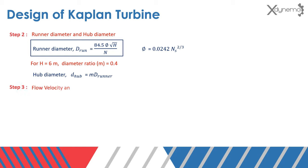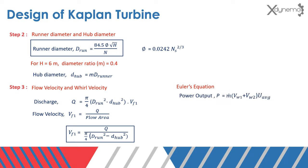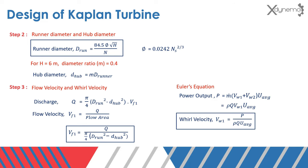Step 3: flow velocity and whirl velocity. Look at the formula of discharge through Kaplan turbine. Flow velocity VF equals discharge divided by flow area. Here is the equation to calculate flow velocity. Let us consider Euler's equation for power output. VW2 is 0 for Kaplan turbines with axial outlet. The average blade velocity is considered in this equation. The whirl velocity VW equals P divided by rho*Q times U_average. Here is the equation to calculate average blade velocity.